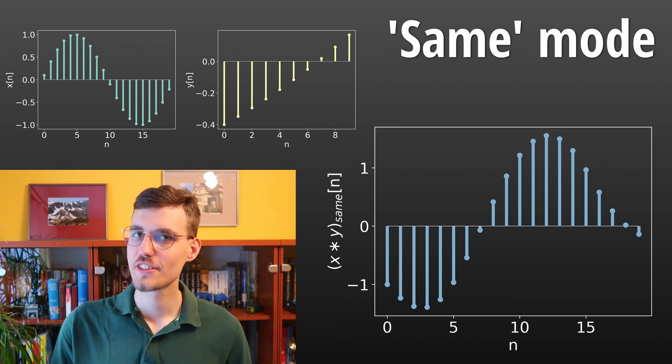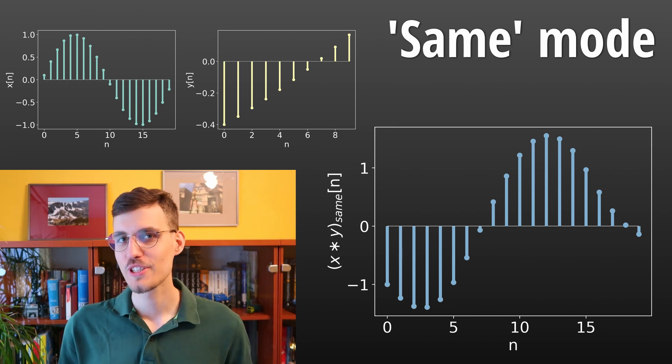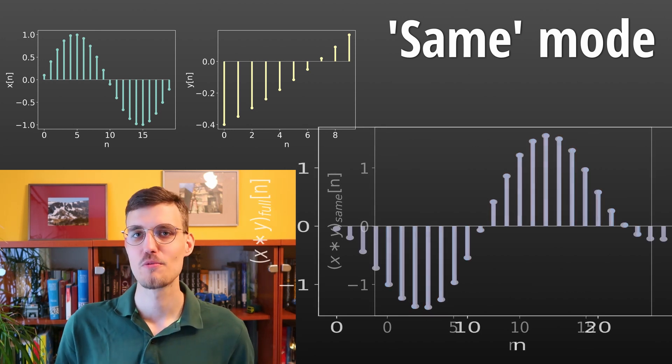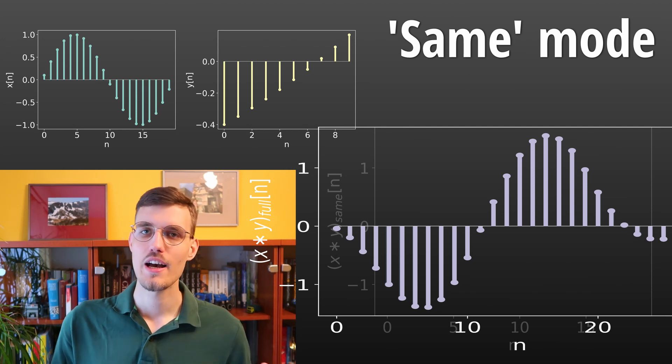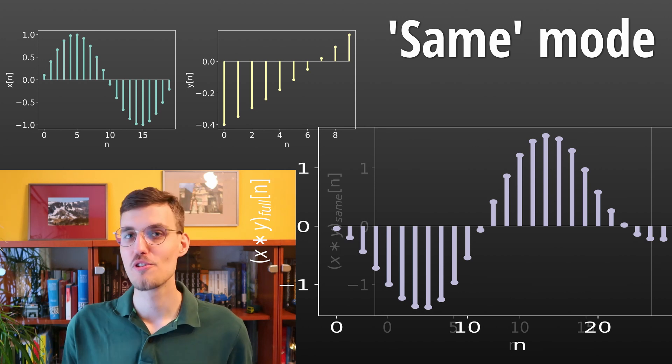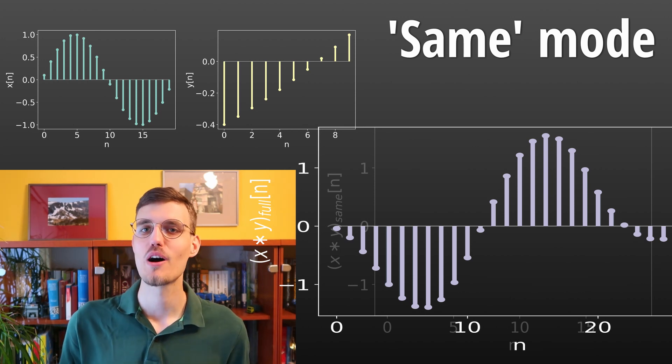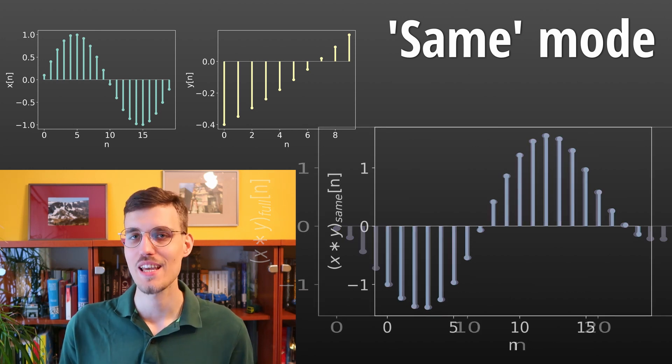Now, you may wonder which part of the full convolution is returned. Usually, it is the middle part with respect to the full convolution mode. However, I believe it is always important to check by yourself that you know and understand which part of the full convolution output is cropped in case of the same convolution mode.